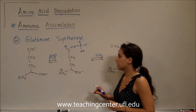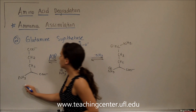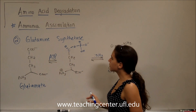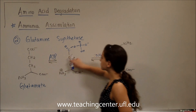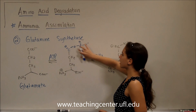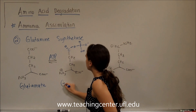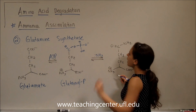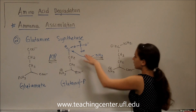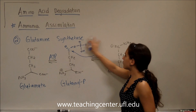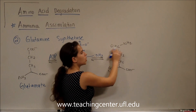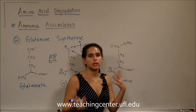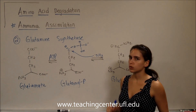An important mechanism to note in glutamine synthetase is the intermediate. Here we have glutamate, and once we add that ATP, we're going to put that phosphate group on the carboxylic acid. Here you can see it — here's the carbonyl and here's our phosphate. This is called glutamyl phosphate. This allows the amino group to attack the carbonyl and kick off the phosphate, giving us a C double bond O to NH2, making glutamine. It's important to know that there is an intermediate, and this is the name of the intermediate: glutamyl phosphate.